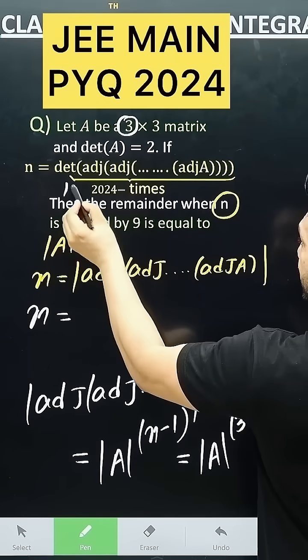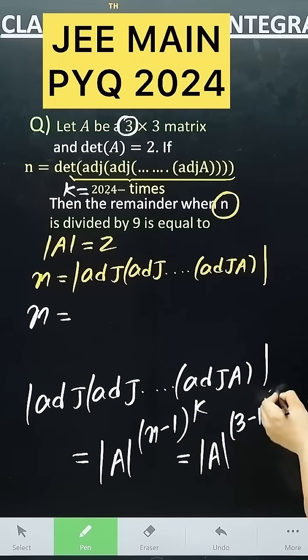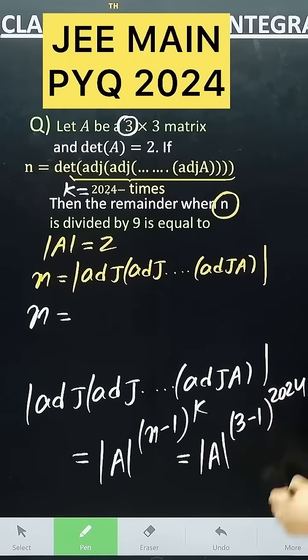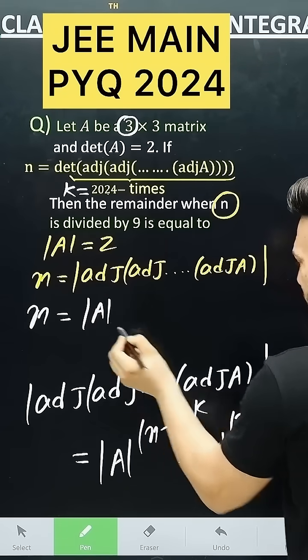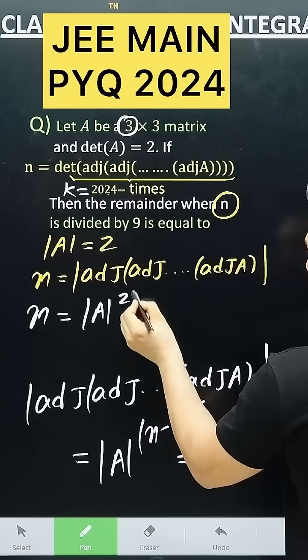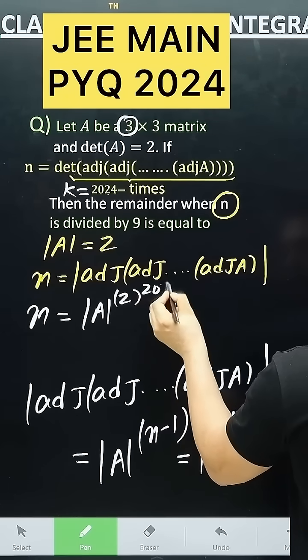How many times is this? It is k, 2024. So you write this as the determinant of A, 3 minus 1 to the power 2 to the power 2024, and the determinant of A is given to us as 2.